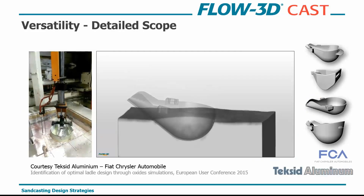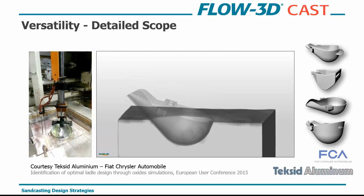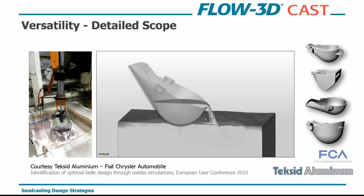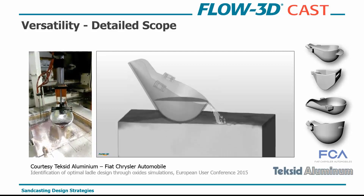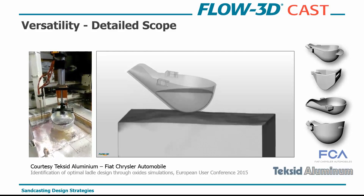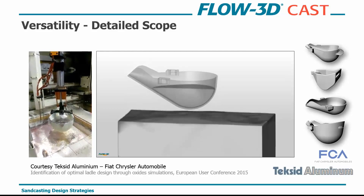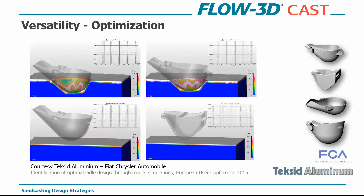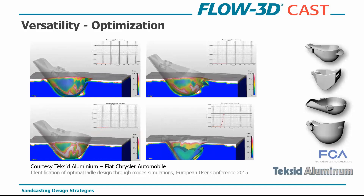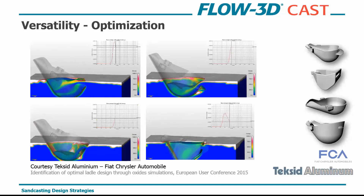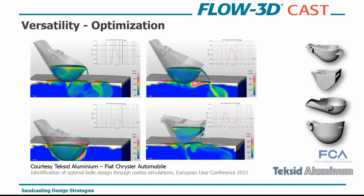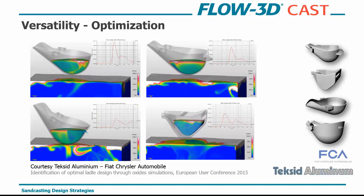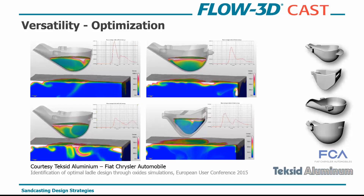Here's an example of a detailed scope done by Tesco Aluminum at Fiat Chrysler. This has nothing to do with the mold itself — they're trying to optimize the geometry of a ladle to lower the amount of oxides introduced into the mold. They looked at four different geometries, outputting turbulent kinetic energy as a variable to visually see how much oxide is introduced, then picked the proper geometry to lower oxides right at the beginning of the pouring stage.